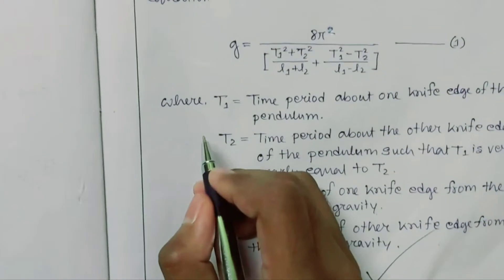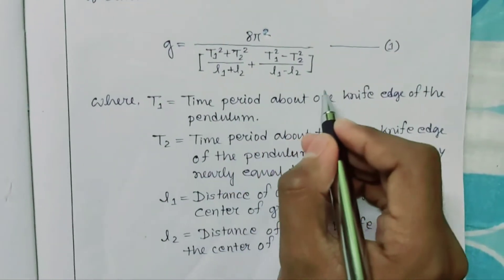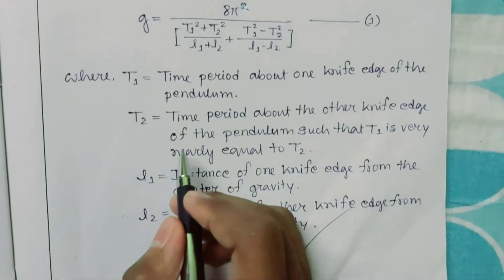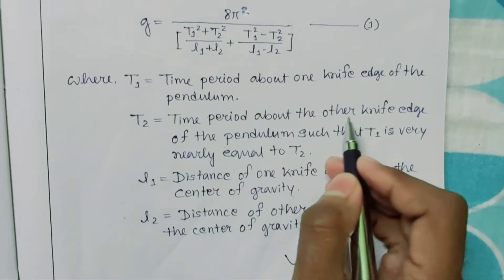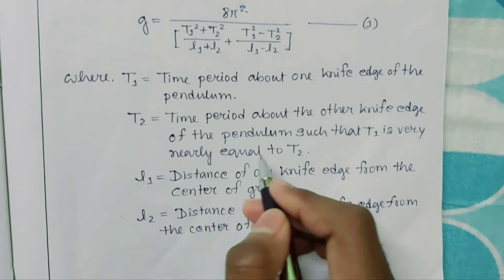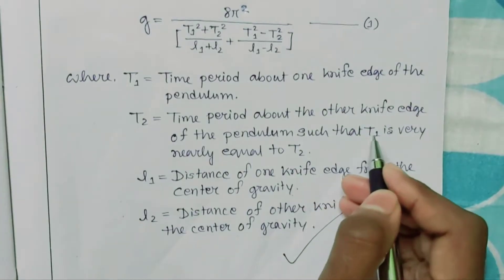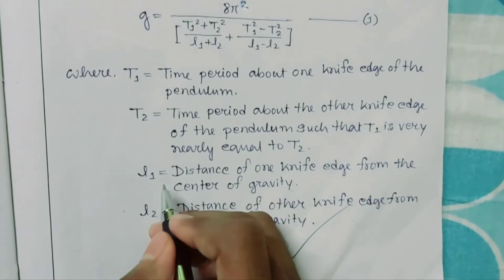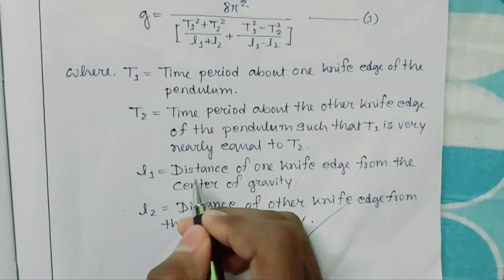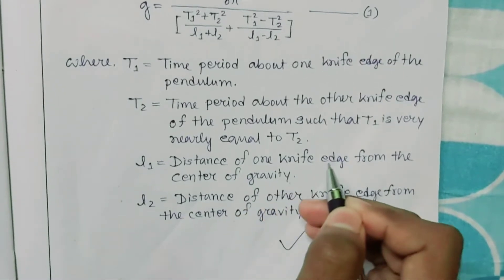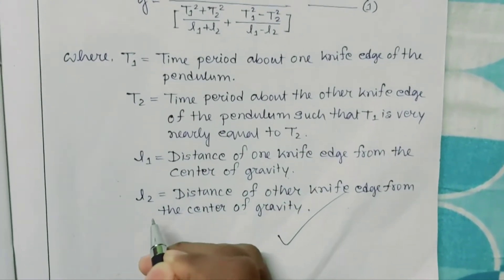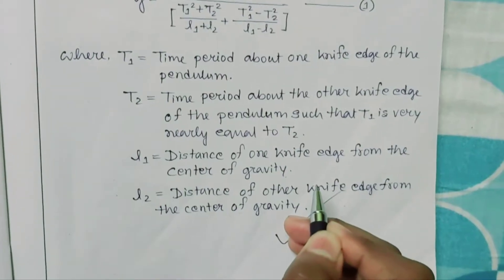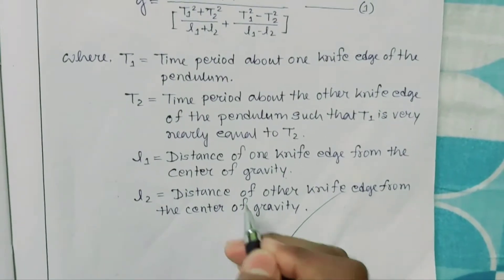Here T1 is the time period about one knife edge of the pendulum, and T2 is the time period about the other knife edge of the pendulum, such that T1 is very nearly equal to T2. L1 is the distance of one knife edge from the center of gravity, and L2 is the distance of the other knife edge from the center of gravity.